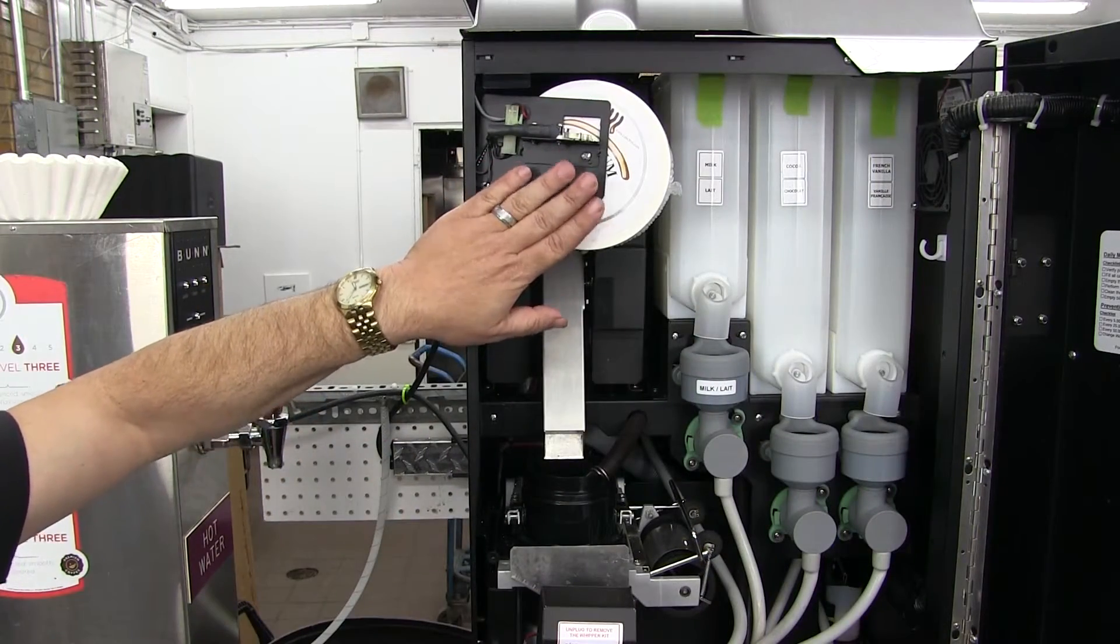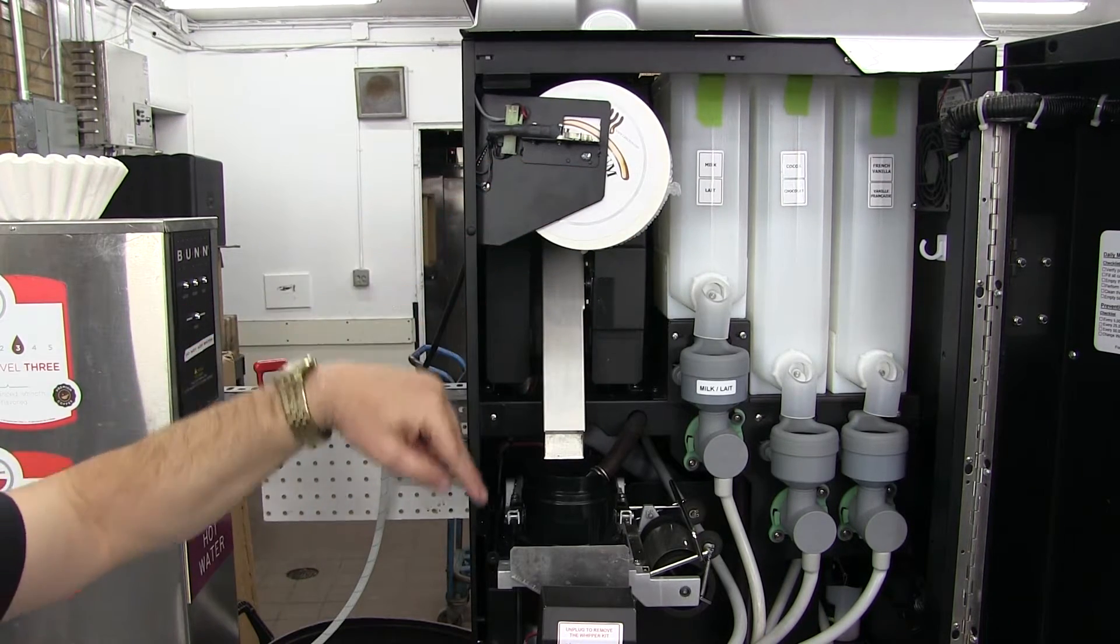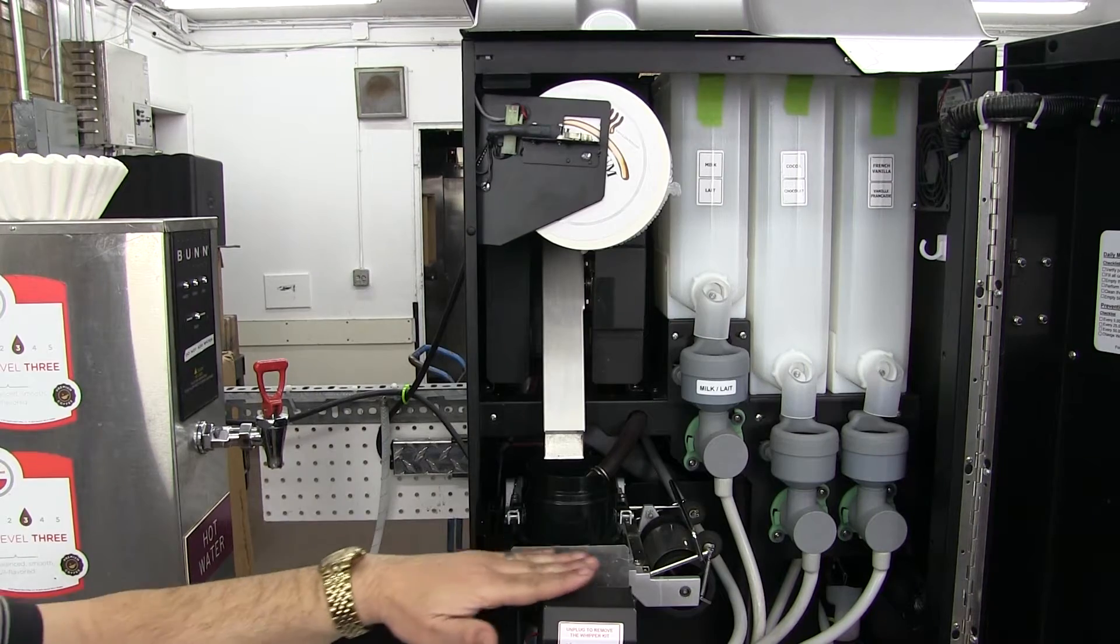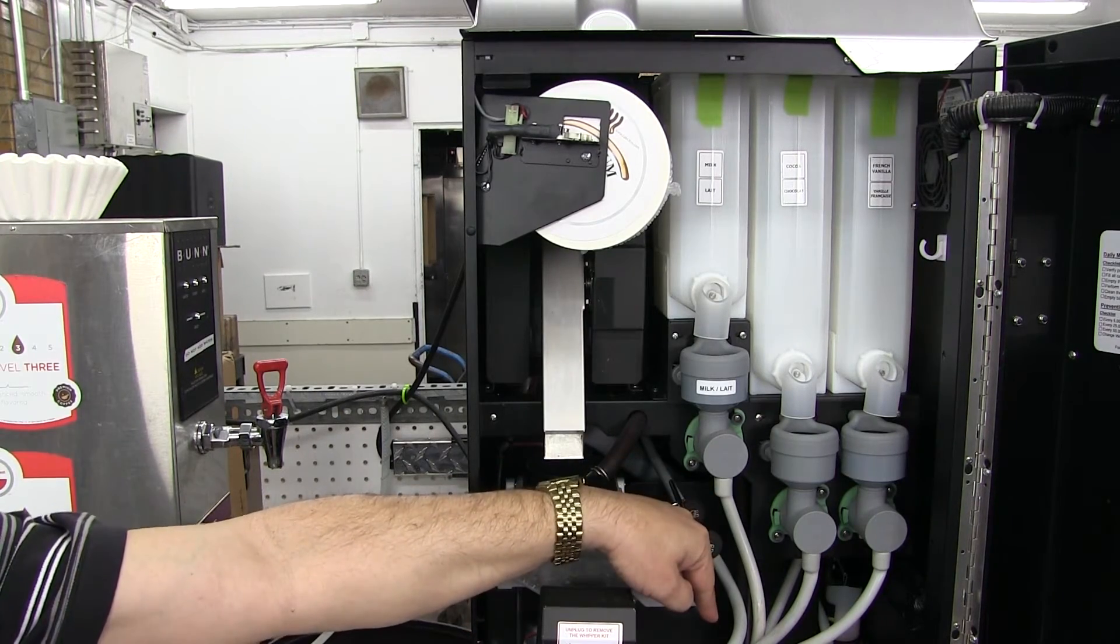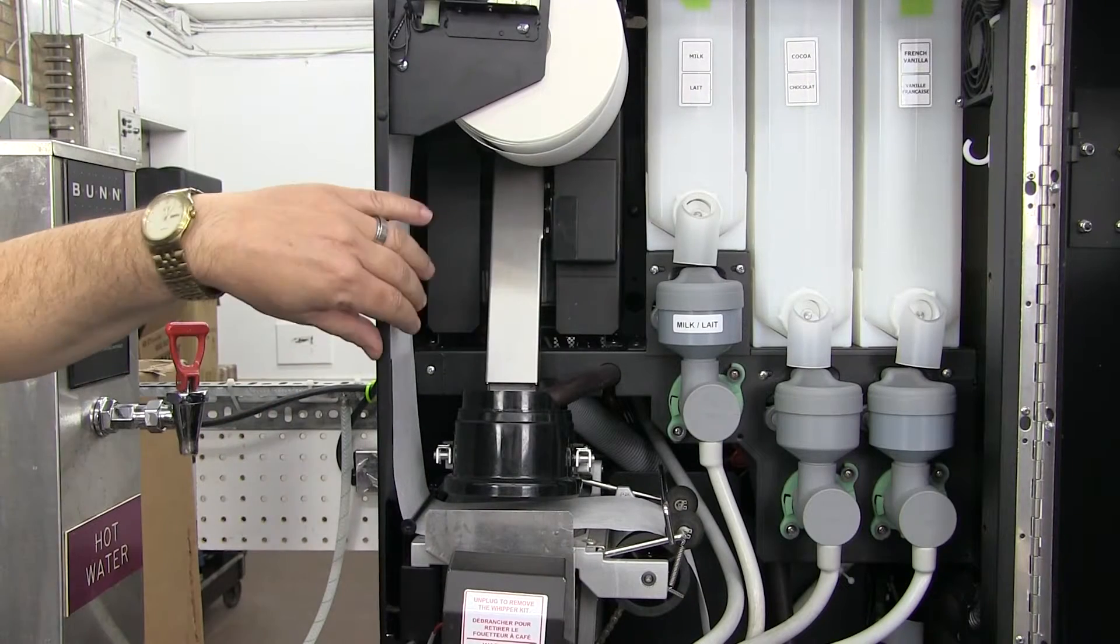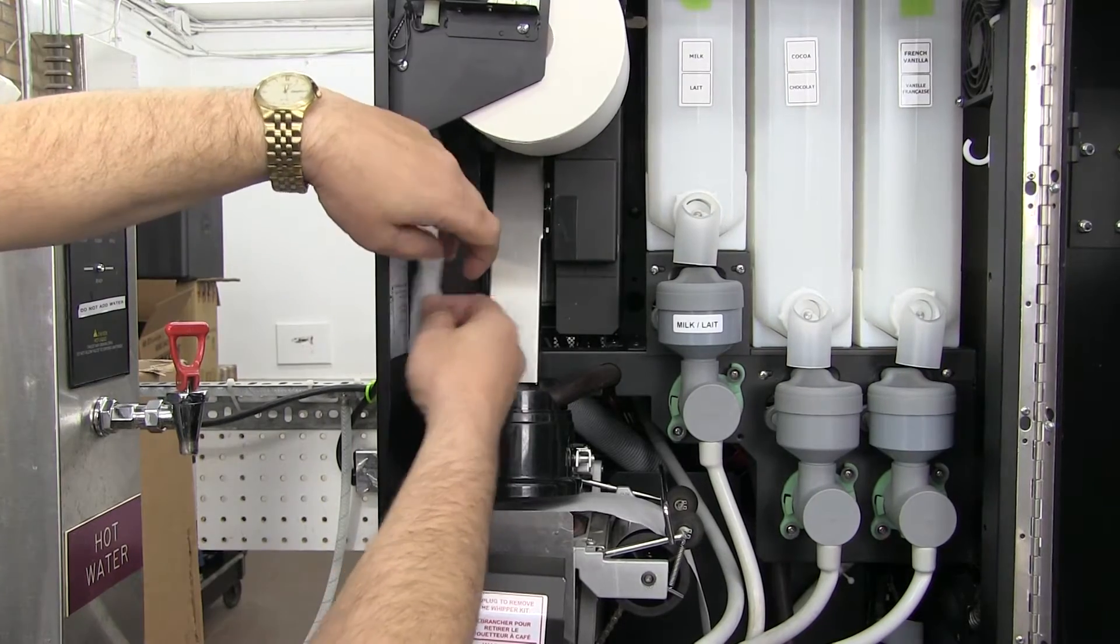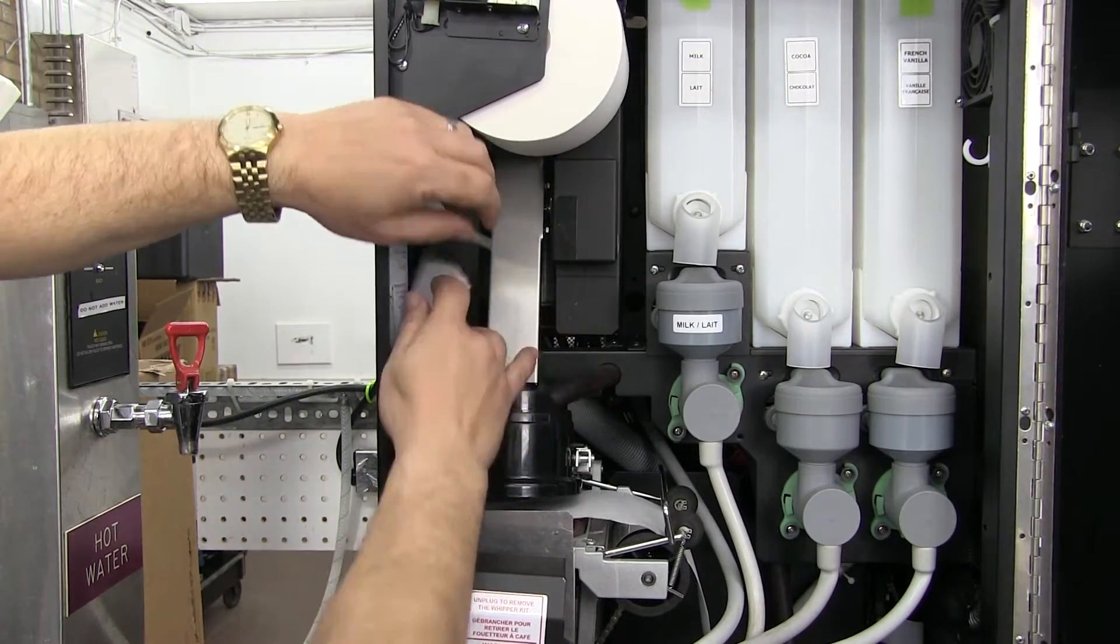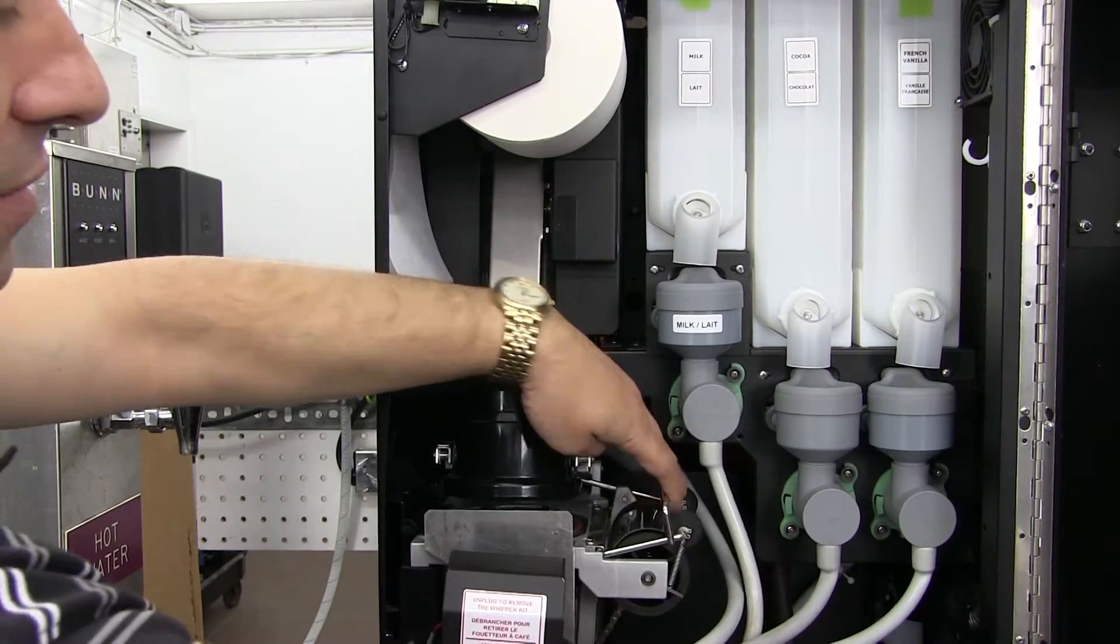The first thing we'll talk about is the paper roll. We'll talk about how it threads through the machine under this arm across the brew surface and eventually exits through the base of the machine. In the event that we were installing a new paper roll, we would tear the paper, lift the silver arm, and pull the paper through into the base of the machine.